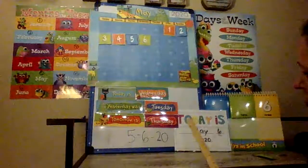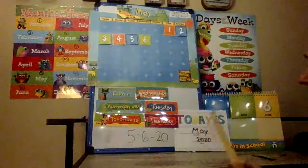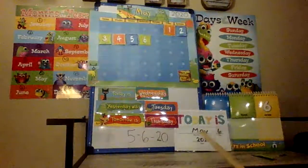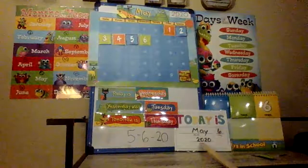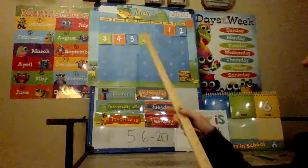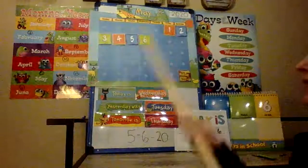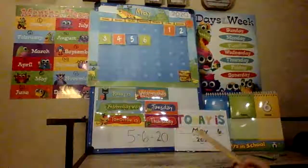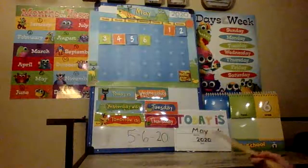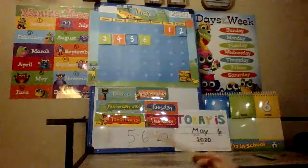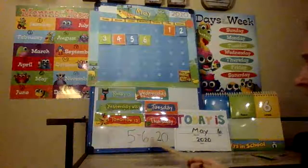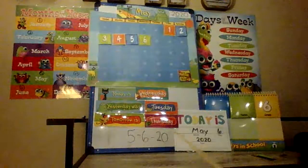I put this here just so that you can see the calendar date all together. This says today is May 6, 2020. I like to float through the calendar so that you can get familiar with where everything is located, but you can also use this as well. Today is May 6, 2020. We also write the day 5-6-20 for when you're doing your assignments.